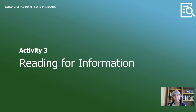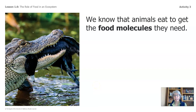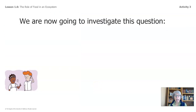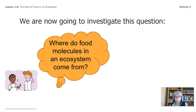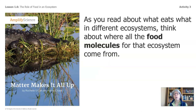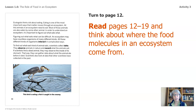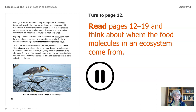Throughout this unit, we'll discover the roles of the different parts of ecosystems, as well as what can happen if something happens to one of the parts. Our last activity for today is reading for information, and we're going to go back to our book and finish reading it. We know that animals eat to get the food molecules they need. We are now going to investigate this question: where do food molecules in an ecosystem come from? As you read about what eats what in different ecosystems, think about where all the food molecules for that ecosystem come from. Turn to pages 12 through 19 and think about that question. Pause the video, read through those pages, and I'll see you in a bit.